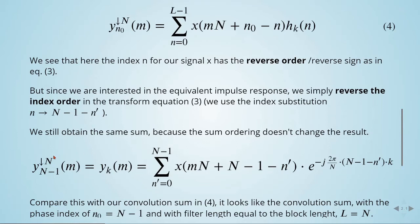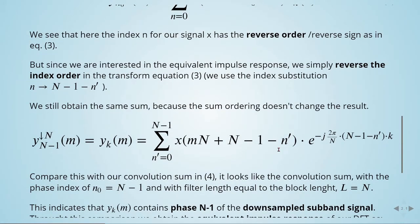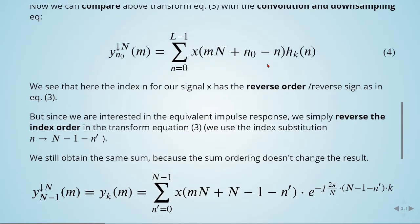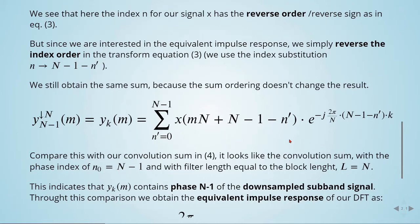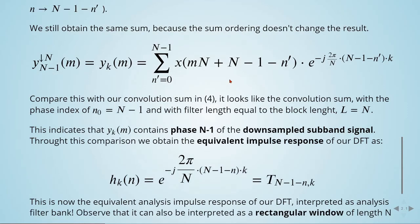Now we have this equation where we replaced n by N-1-n'. When we compare this with our convolution sum in equation 4, it looks like the convolution sum with phase index n₀ = N-1 and filter length equal to the block length L = N. This indicates that y_k(m) contains phase N-1 of the downsampled subband signal.